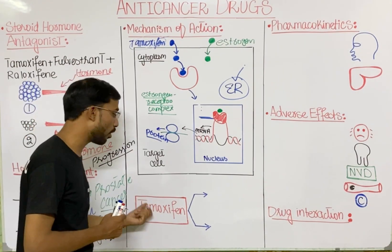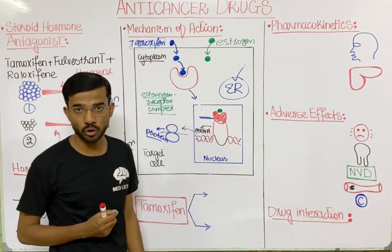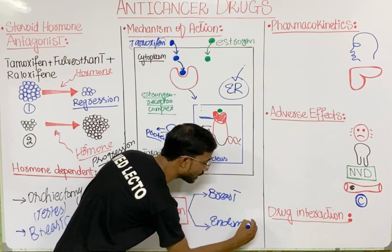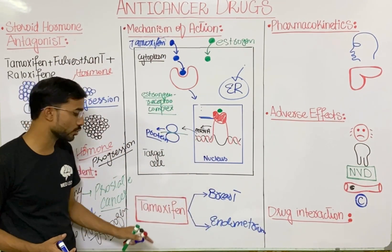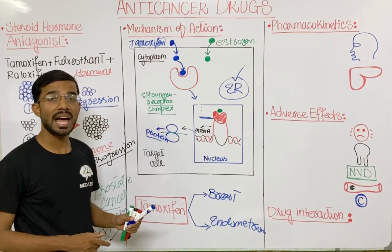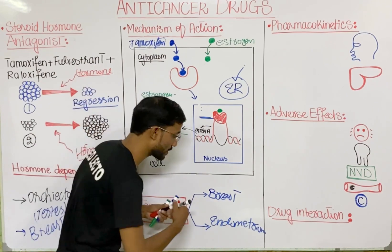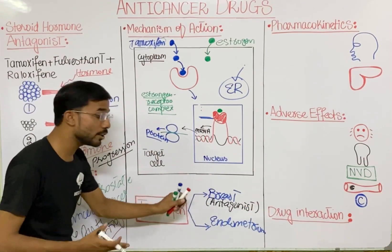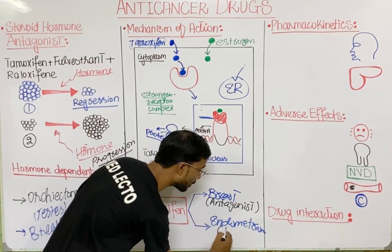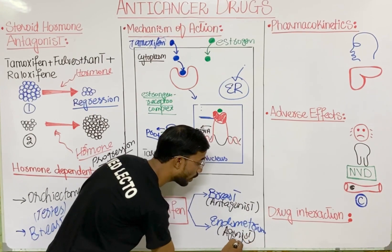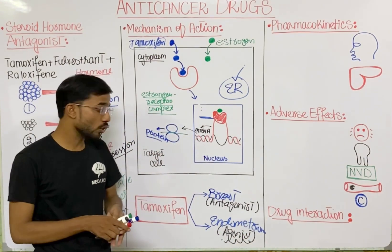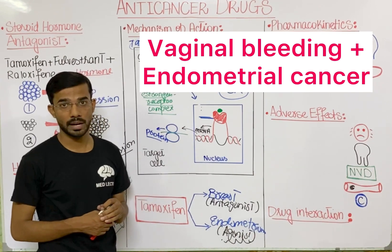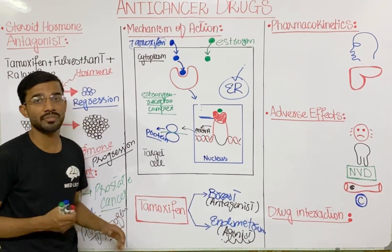There are two important actions of Tamoxifen: one in the breast and one in the endometrium. Tamoxifen acts as an estrogen antagonist in the breast, working against estrogen. But in the endometrium — the lining of the uterus — it acts as an agonist, increasing the effects of estrogen. Due to this agonist action in the endometrium, you will see vaginal bleeding and endometrial discharge, which is an adverse effect of Tamoxifen.